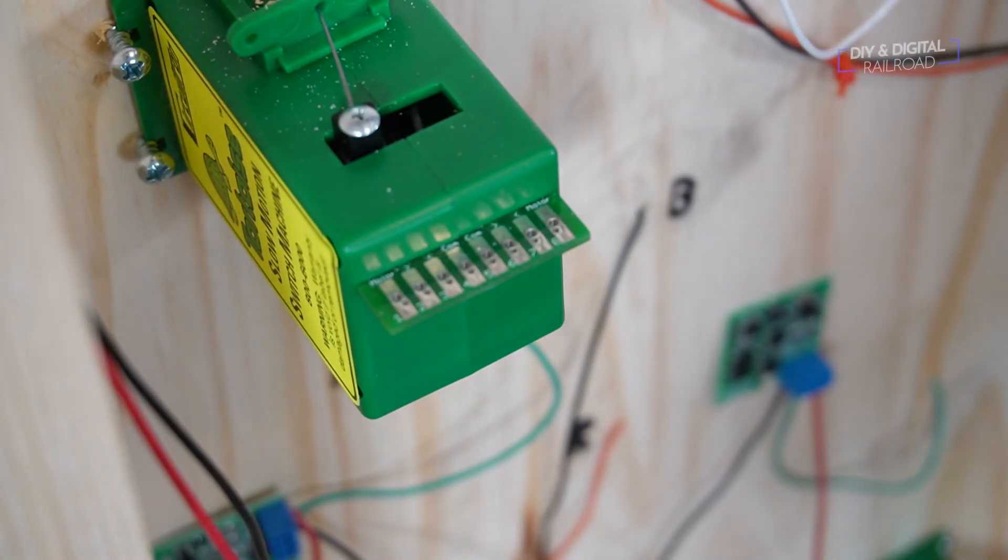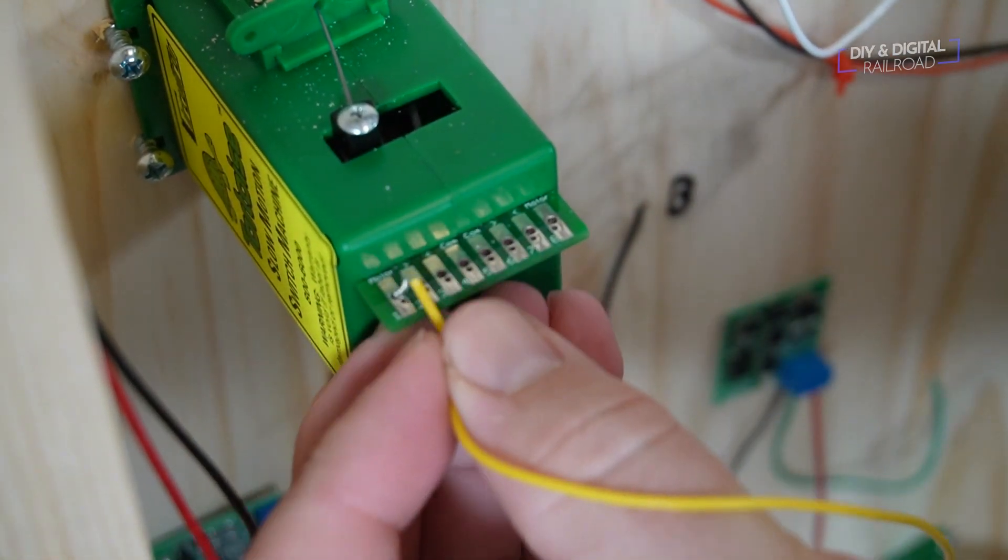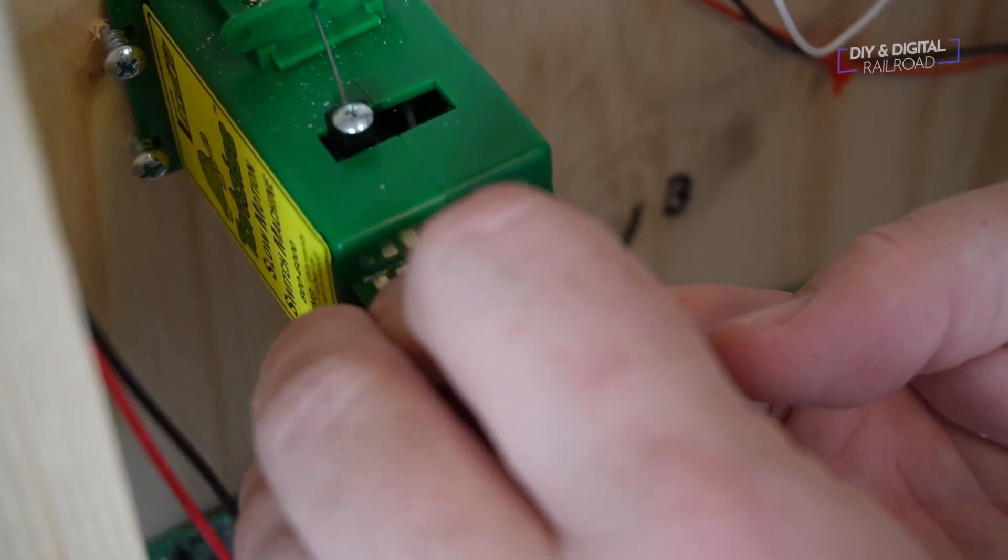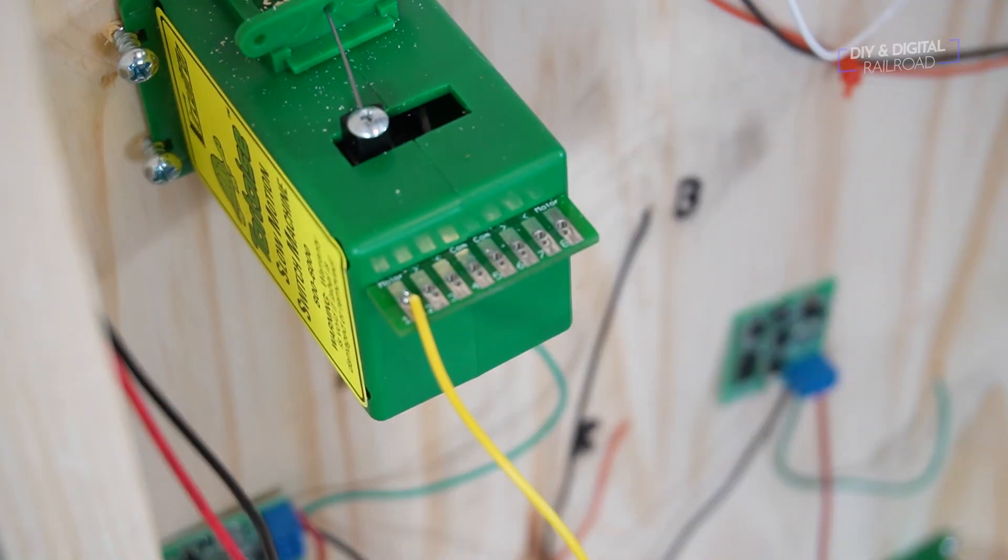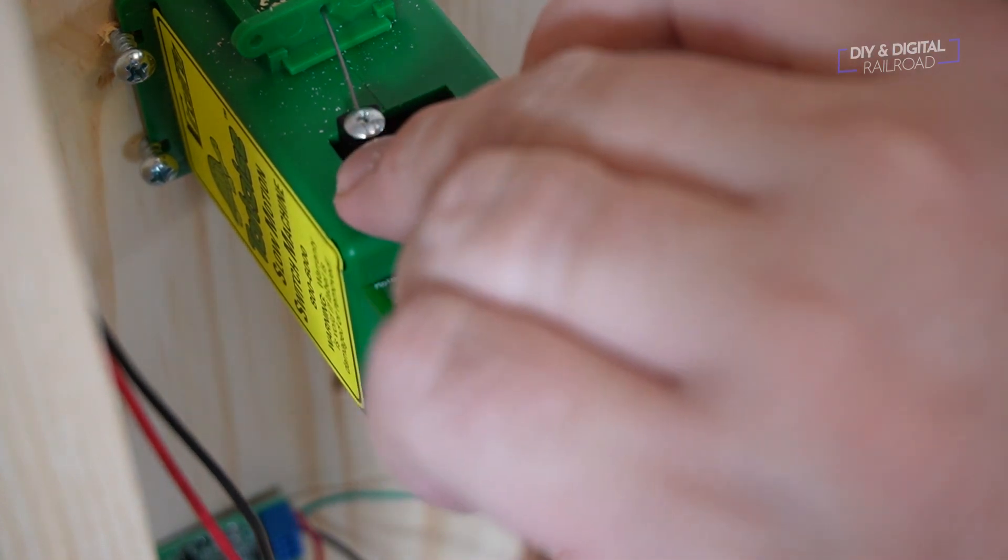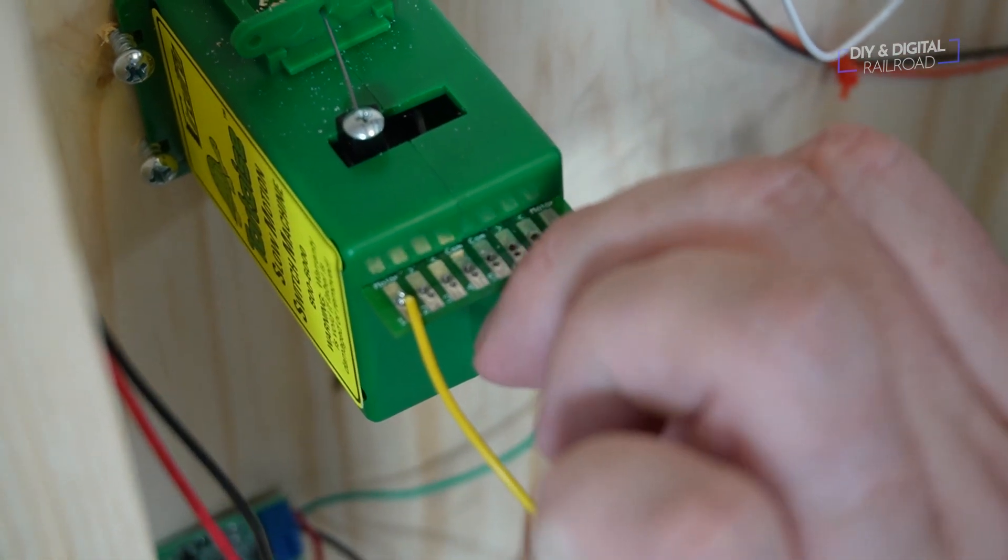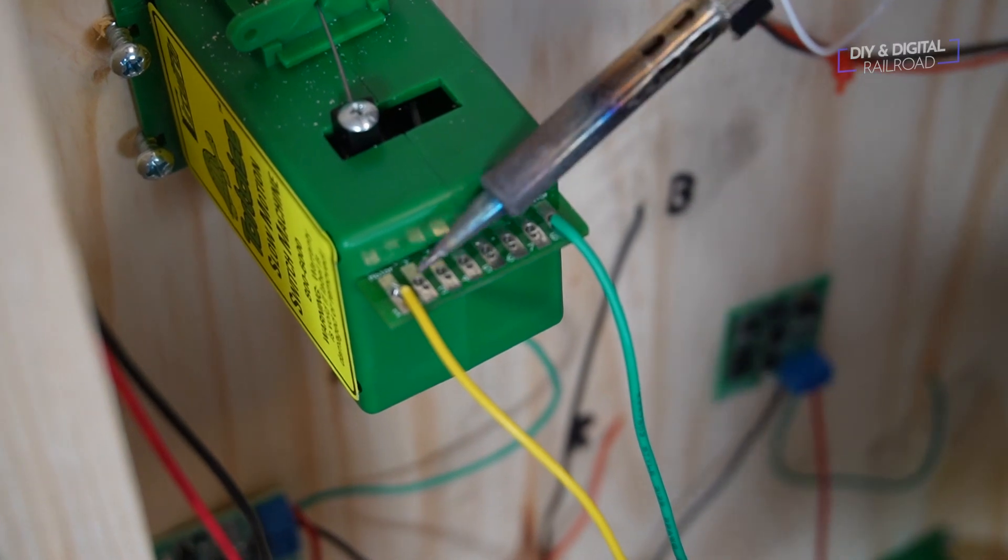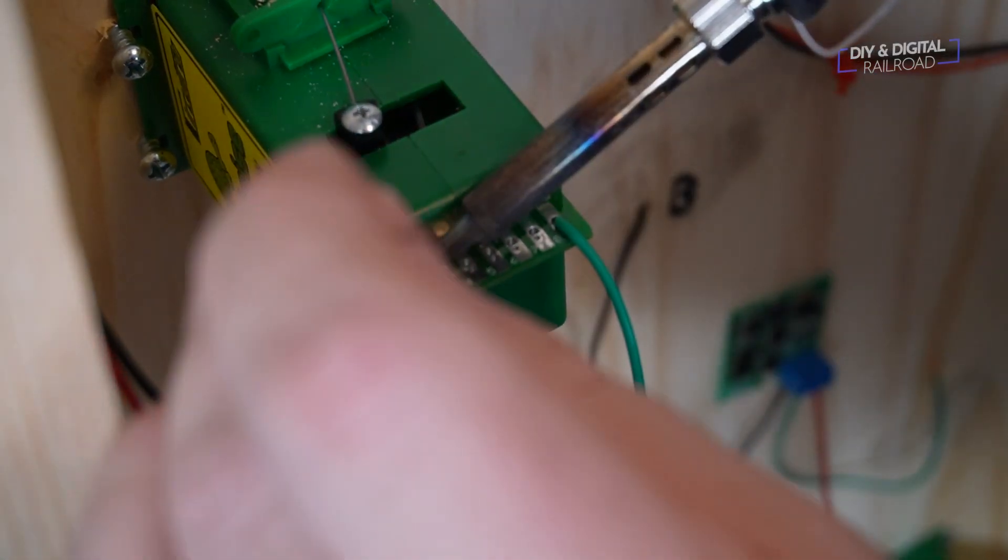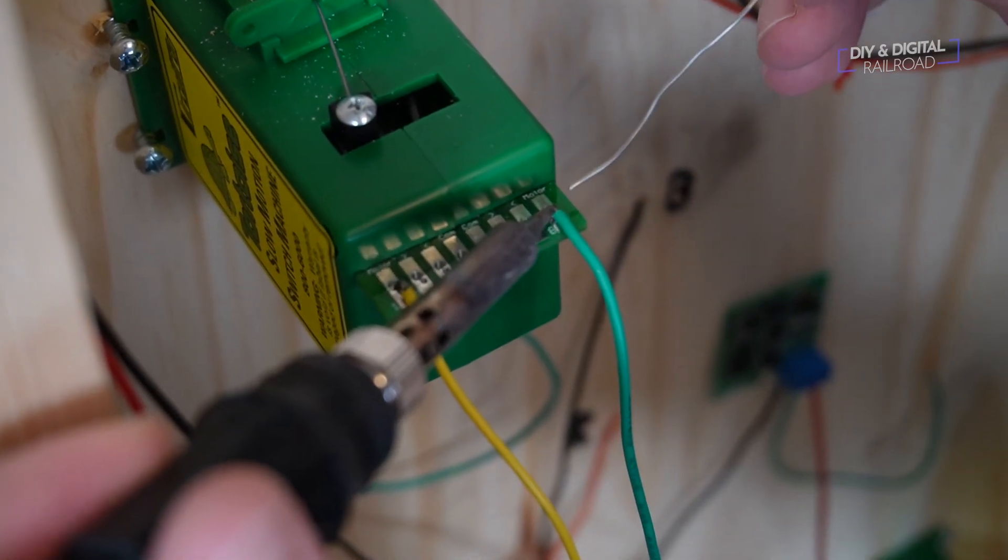Now it's time to wire up the tortoise switch machines. Tortoises have eight connections on them and connections one and eight which are on each end are for controlling the switch motor, so we'll need to go ahead and attach wires to pad one and eight. These are very easy to solder to, as a matter of fact they've got a little hole in them that you can hook a wire through and then just drop a little bit of solder. I know that there are connection terminals that you can put on these but I've never had an issue soldering a tortoise switch machine. It's a super simple process.